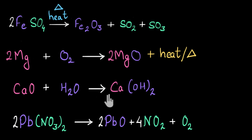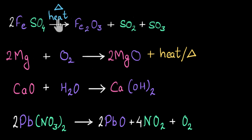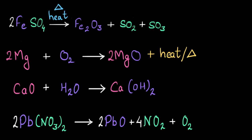Now I have some reactions and let's try to identify them as exothermic and endothermic reactions. In the first reaction, I can see that heat or delta is being mentioned on top of the arrow. This symbolizes that the reaction requires heat to begin or proceed. Reactions that require heat are called endothermic, so this is an example of an endothermic reaction.